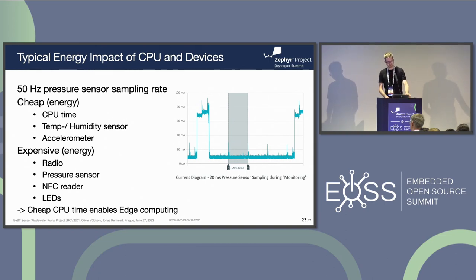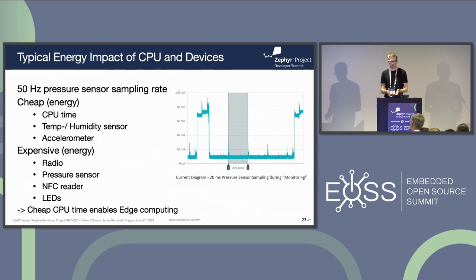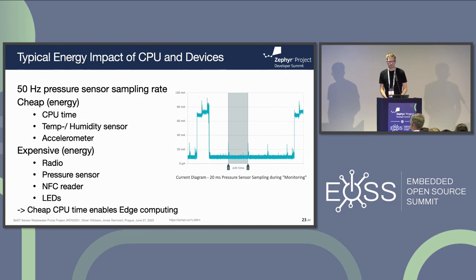This edge computing use case makes sense because we have CPU time we can use without consuming too much energy. At the same time, if we were to send raw data to the cloud, we would always need to keep the radio on or at much larger intervals, which would ultimately consume much more energy. Radio time is always expensive.